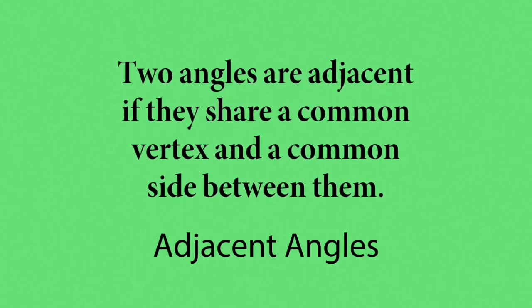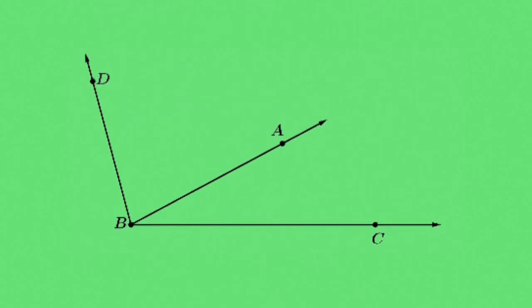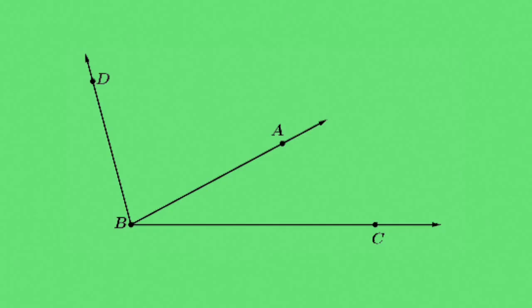Recall that two angles are adjacent if they share a common vertex and a common side between them. So in this example, angle DBA is adjacent to angle ABC, because they share side BA and they share the vertex B.